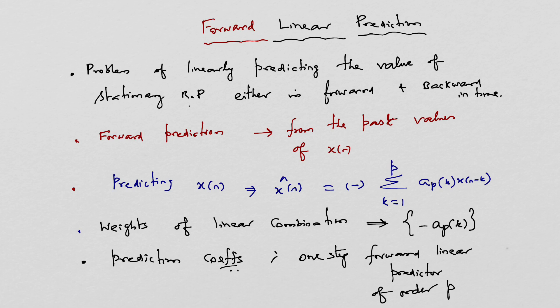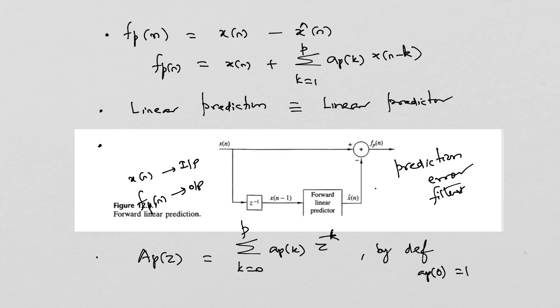The set a_p(k) represents the weights in a linear combination. These weights are called the prediction coefficients of the one-step forward linear predictor of order p. The negative sign in the definition of x̂(n) is for mathematical convenience, which conforms to current practice in the technical literature. The difference between the original value x(n) and the predicted value x̂(n) is called the forward prediction error f_p(n). So, f_p(n) equals x(n) minus x̂(n), which becomes summation k equals 1 to p of a_p(k) times x(n-k).